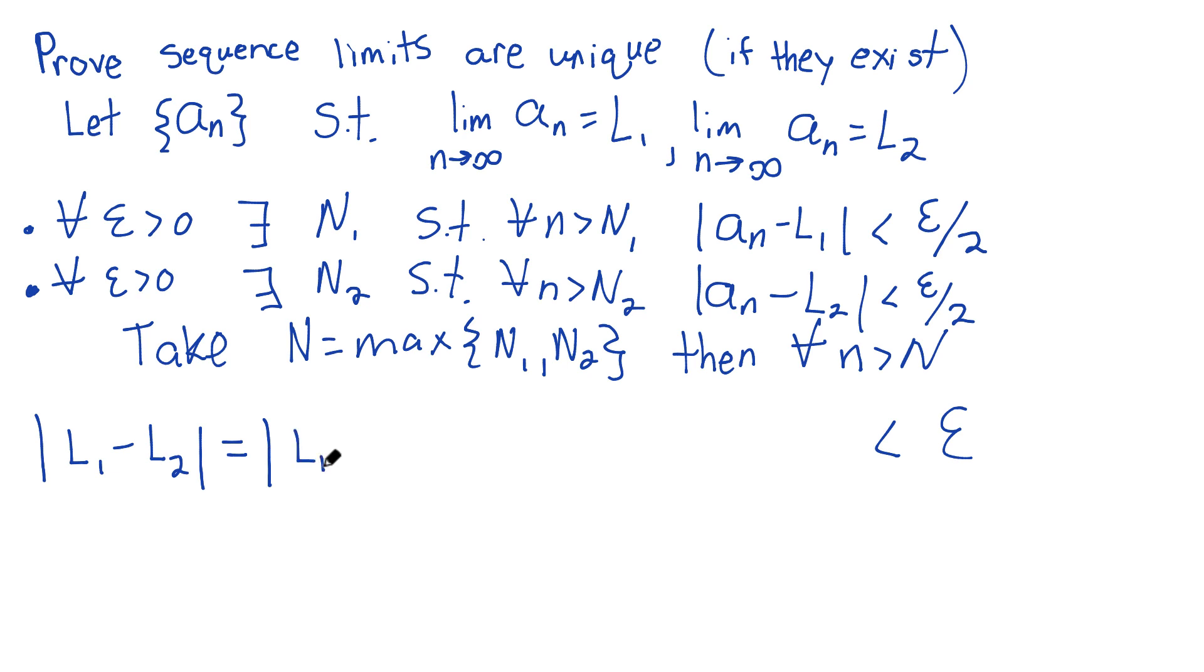So I have L1, and I'm going to subtract a sub n. But I can't just subtract a sub n. I have to also add it to keep it balanced. This is my addition by zero. Why do this? Well, now I can just go ahead and use the triangle inequality, grouping things like this. So this, via the triangle inequality, is less than or equal to absolute value of the first one plus absolute value of the second one.